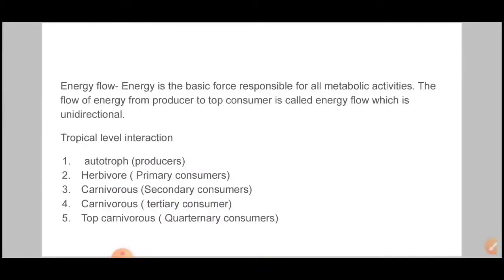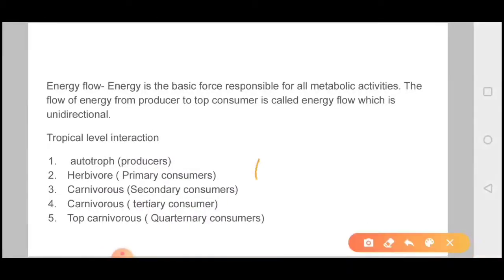When energy flows from one trophic level to another, basically 10% of energy is always lost. There is a loss of some energy in the form of unusable heat at each trophic level, so that the energy level decreases from the first trophic level upwards.